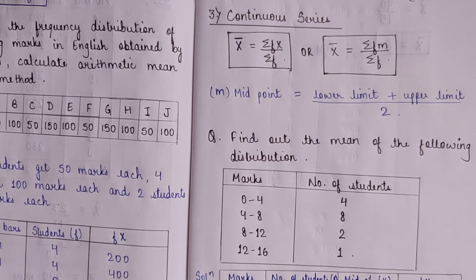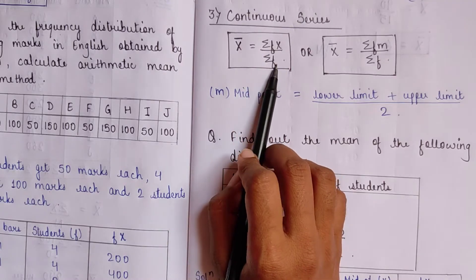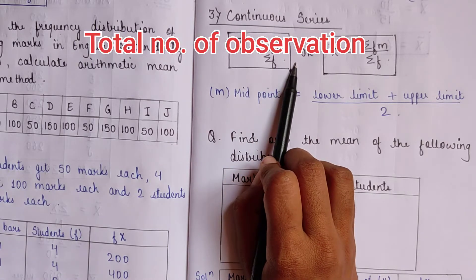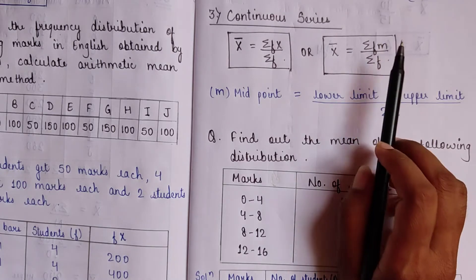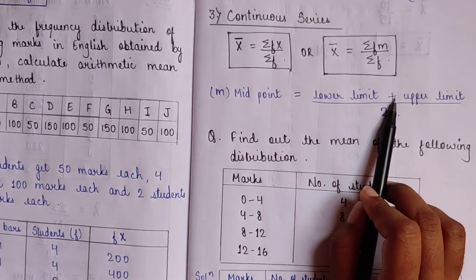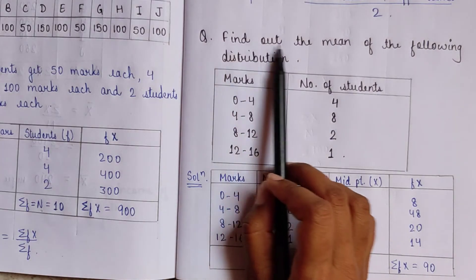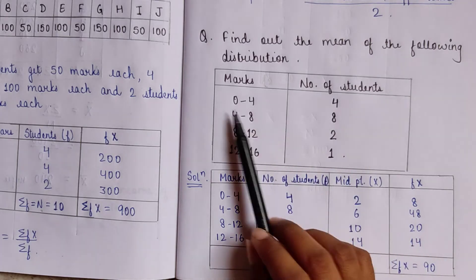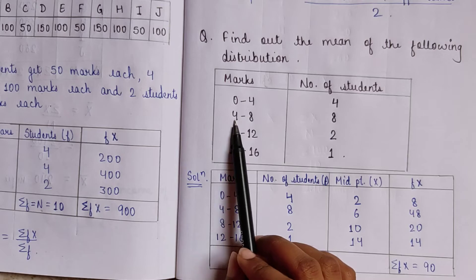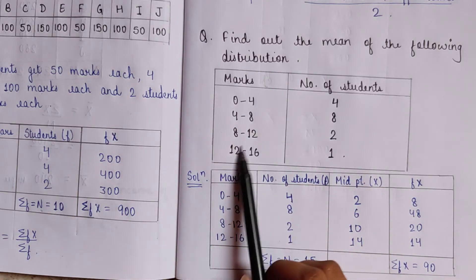For continuous series, the formula is the same: mean = ΣFx / ΣF, where ΣF = N is the number of observations. Question: find the mean of the following distribution. Marks are given as class intervals — 0 to 4 with 4 students, 4 to 8 with 8 students, 8 to 12 with 2 students, and 12 to 16 with 1 student.